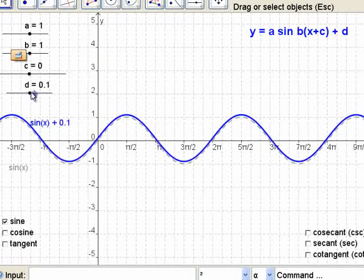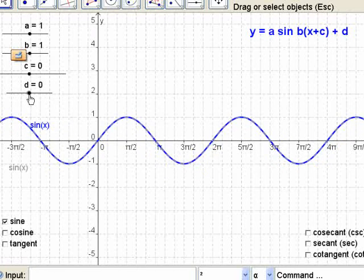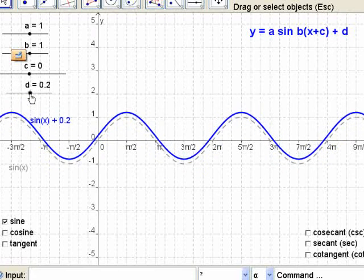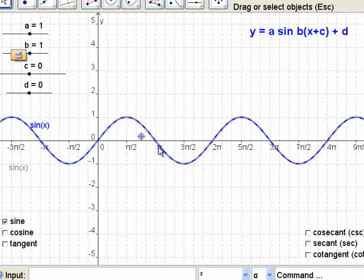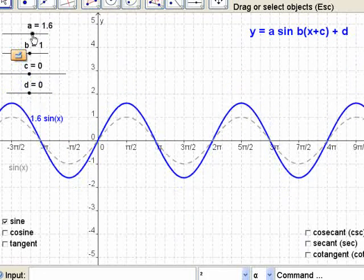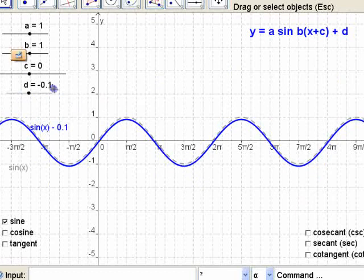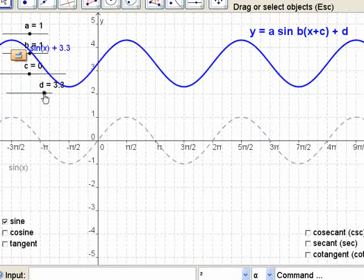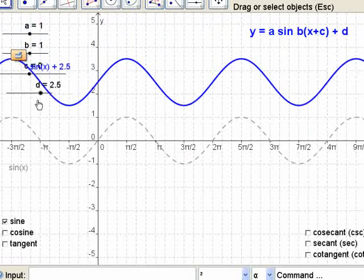That's different than the expansion or compression. The expansion or compression changes the... What does the expansion or compression change about the graph? When you expand it and compress it, it changes the amplitude of the thing. When you change the vertical displacement, it doesn't change the amplitude. It changes the max and min and the range and all that, but it doesn't change the amplitude.